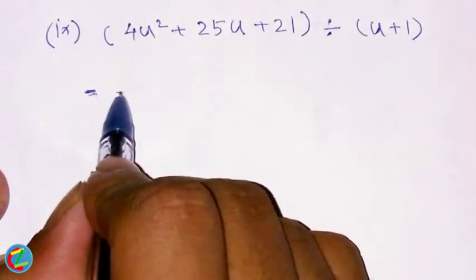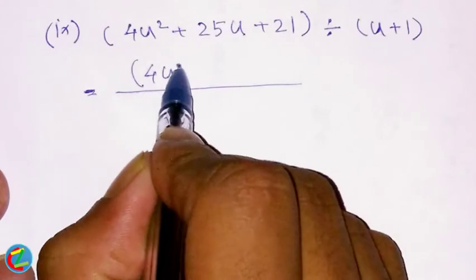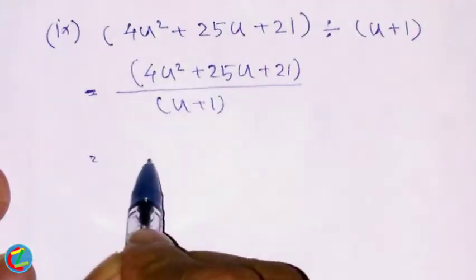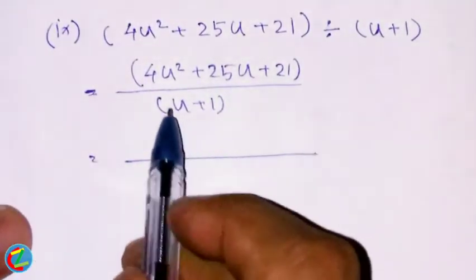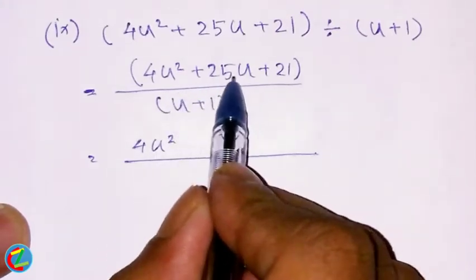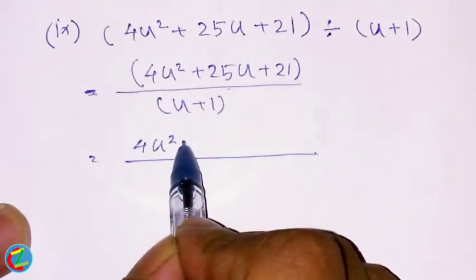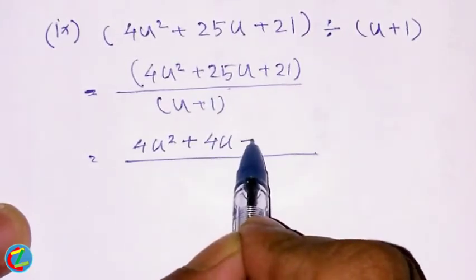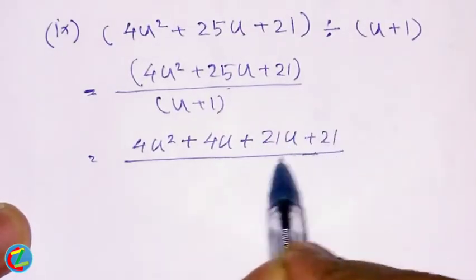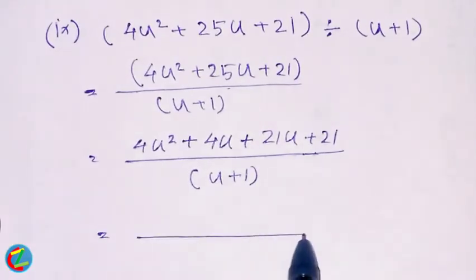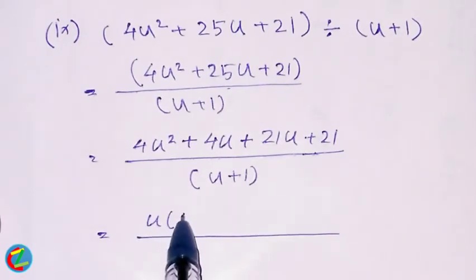4u² + 25u² + u + 1. Now, the line is going to favor 4u² + 25u + 20u. You can do 4u² + 25u² + 20u + 4u² + 25u.